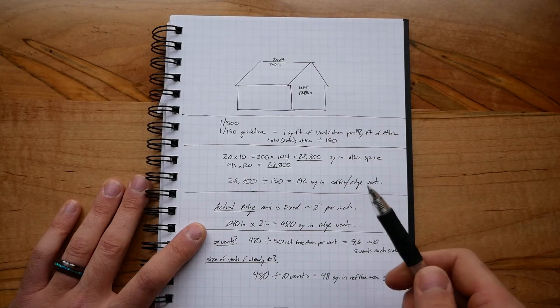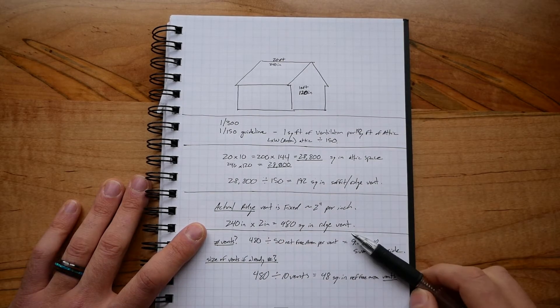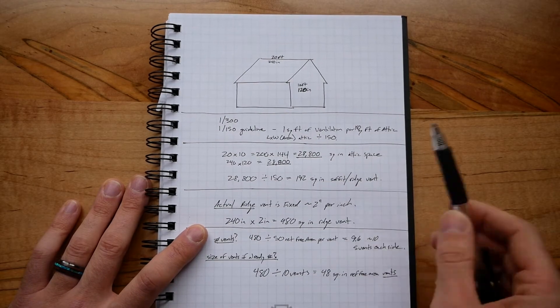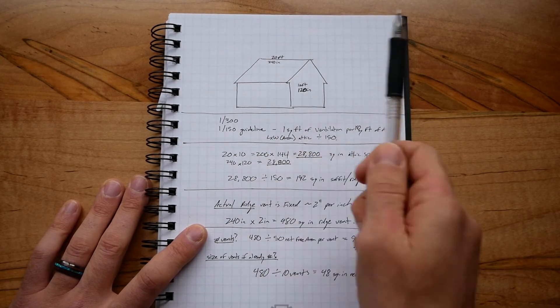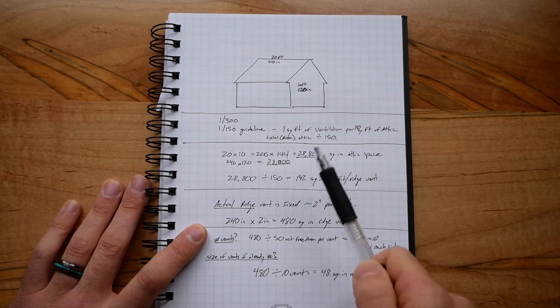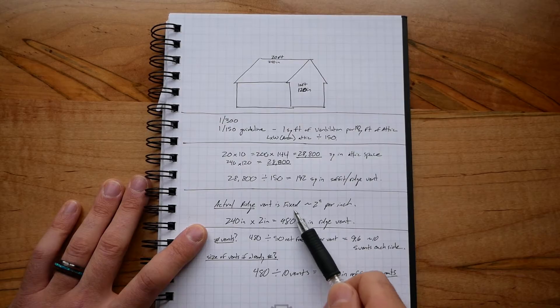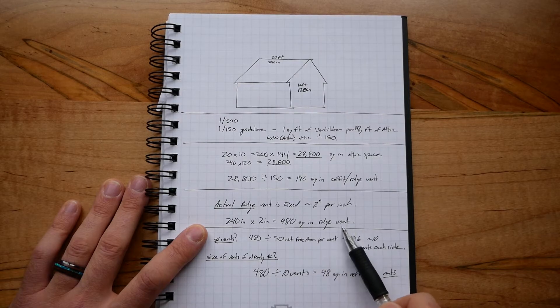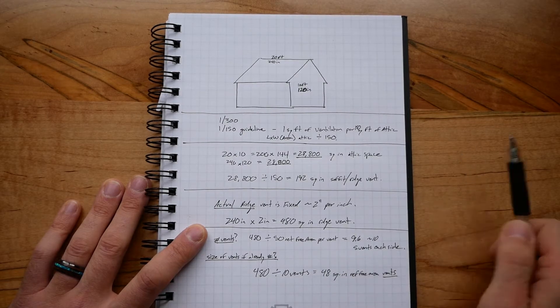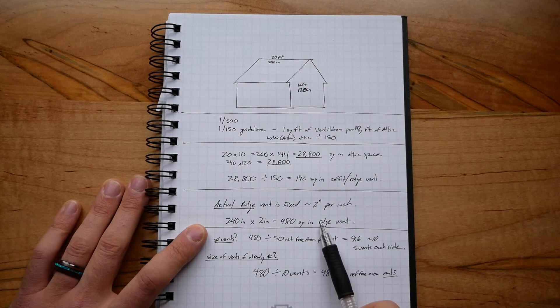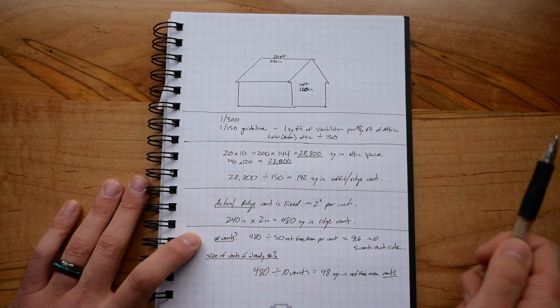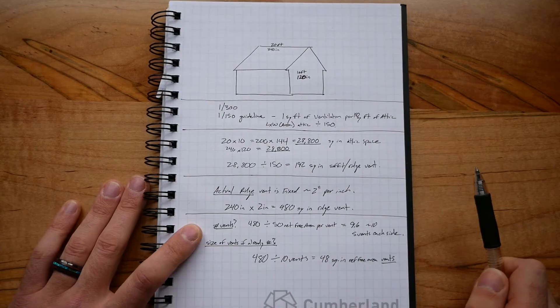If we want to do an actual ridge vent calculation, not this theoretical one, we would say we have a fixed length on the top of our roof, and that's 20 feet here or 240 inches, and it has about two inches on each side of it, so we have about 480 square inches of ridge vented space. We would want that equivalent amount on our soffits. We can do two different calculations here.